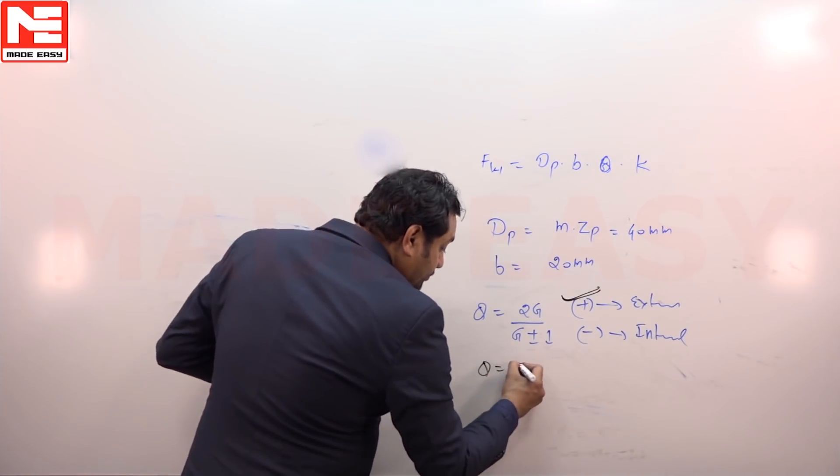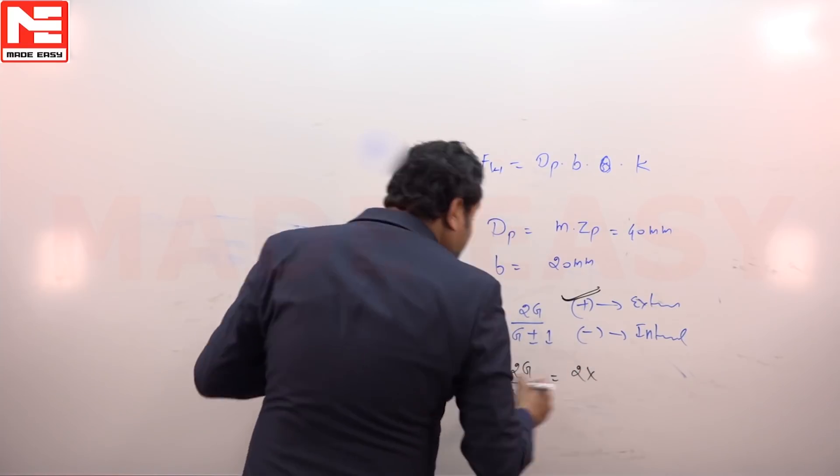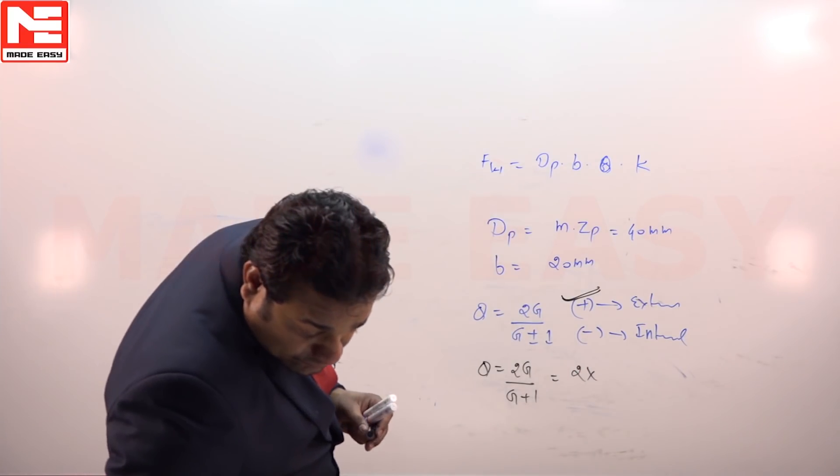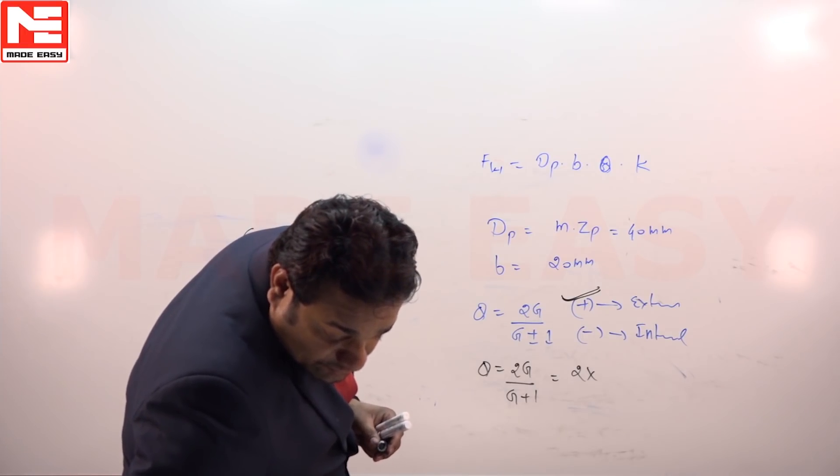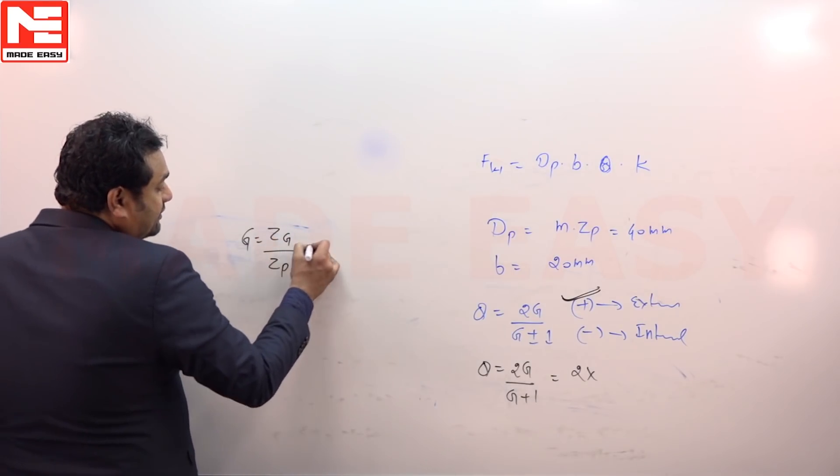Q value is 2G divided by G plus 1. G is given; gear ratio is given in the question. Gear ratio G is 3.